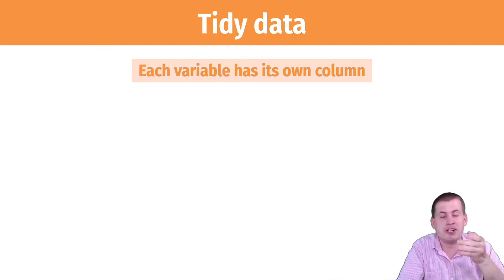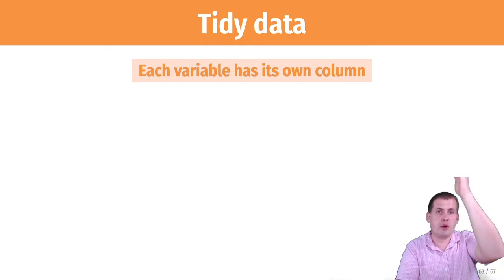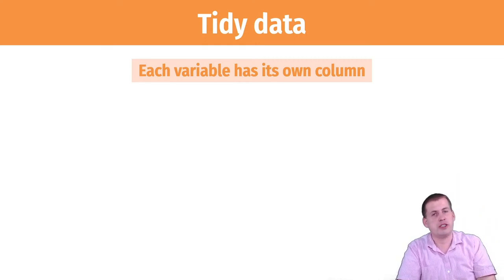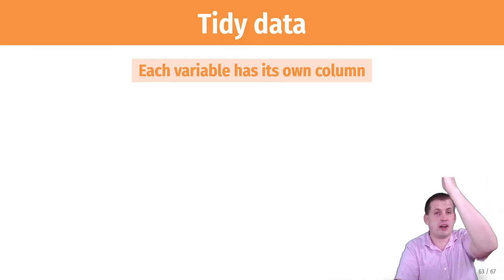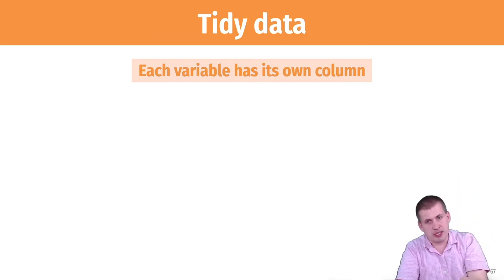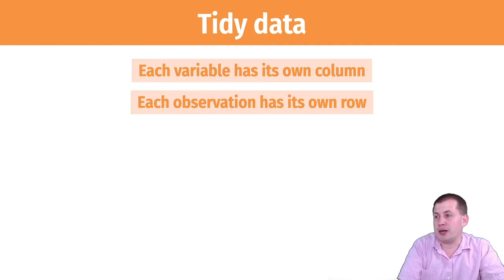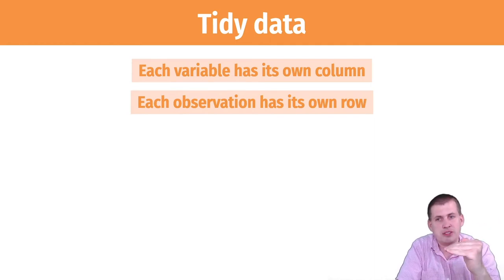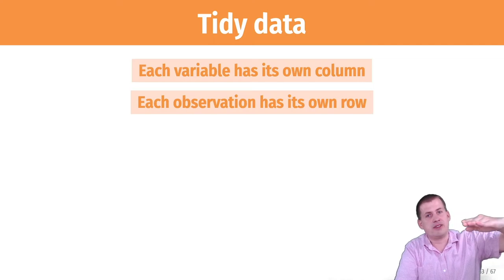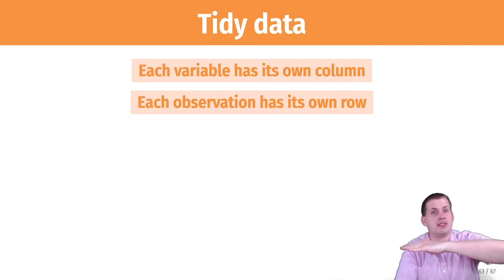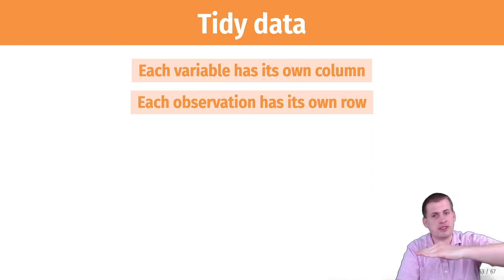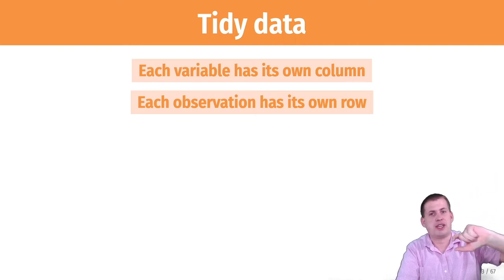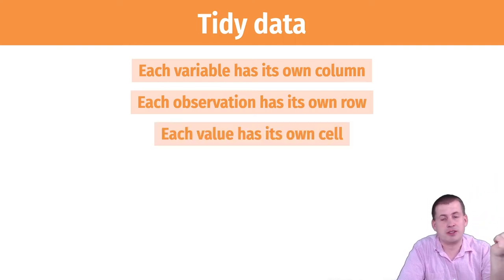For data to be tidy, it has to meet three requirements. First, every variable has to have its own column. For instance, with the gapminder data, you'll have one single column for year — not a column for 2007, a column for 2008, and a column for 2009, just one column called 'year'. Second, every observation has to have its own row — so Afghanistan in 2007, Afghanistan in 2008, and Afghanistan in 2009 are each separate rows.